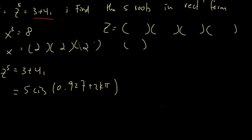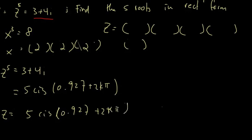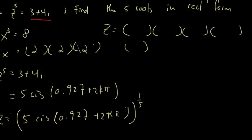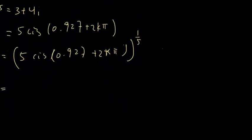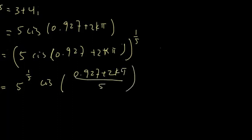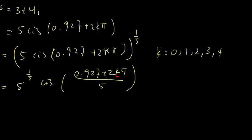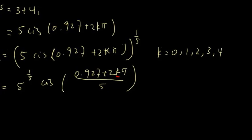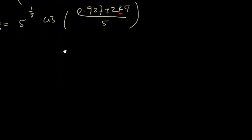To get rid of the 5th power, we raise everything to the power of 1 over 5: 5 cis(0.927 + 2kπ) all raised to 1/5. From De Moivre's theorem, that gives 5^(1/5) cis((0.927 + 2kπ)/5). We then iterate k from 0 to 4 to get our 5 roots.